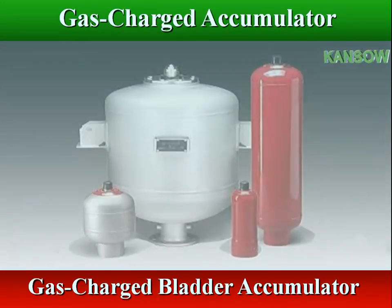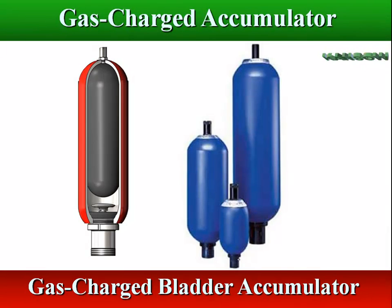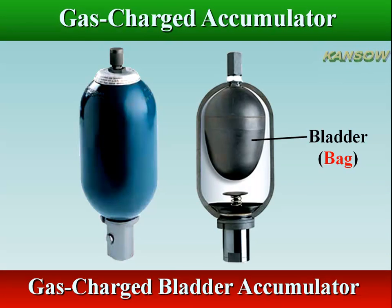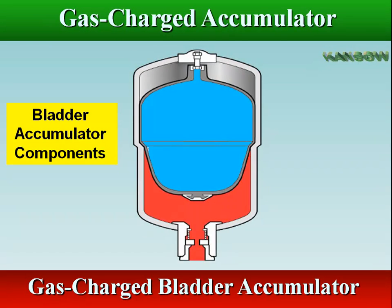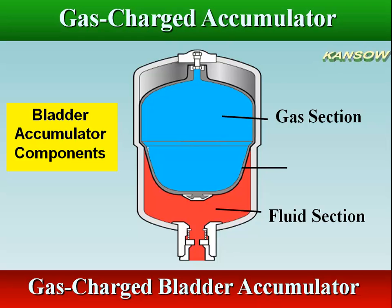A bladder accumulator consists of a seamless high-pressure cylinder with an internal elastomeric bladder, with pressurized nitrogen on the inside and hydraulic fluid on the other external side. A hydraulic bladder accumulator consists of a gas section inside the bladder and a fluid section outside of the bladder. The flexible rubber bladder acts as a gas-proof barrier.